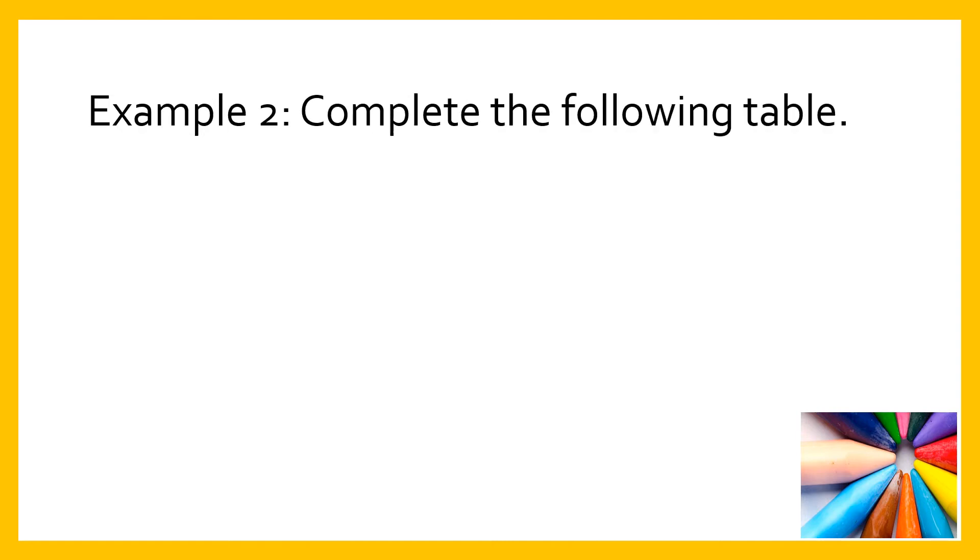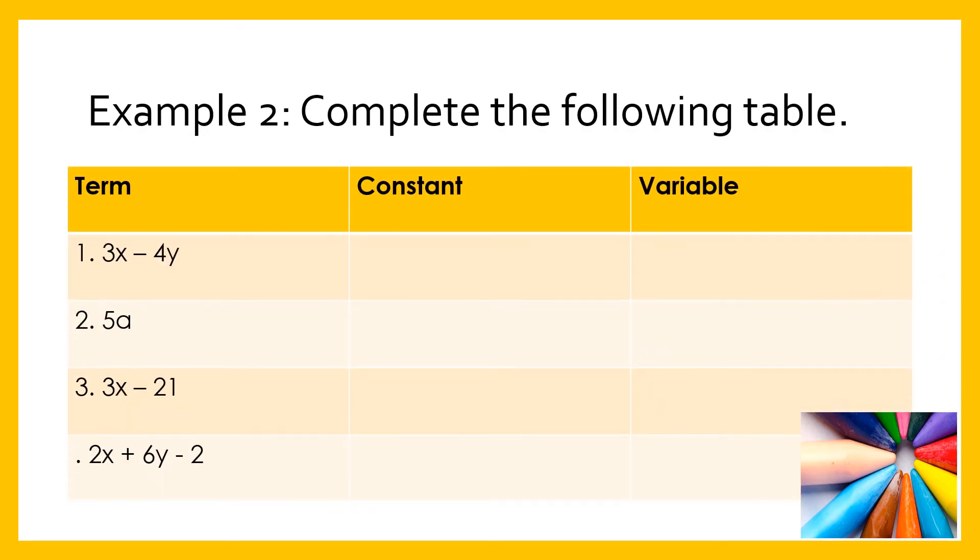We have example number 2. Complete the following table. Here we need to find out what is constant. In 3X - 4Y, the constants are 3 and -4, and the variables are X and Y. In 5A, the constant is 5 and the variable is A.